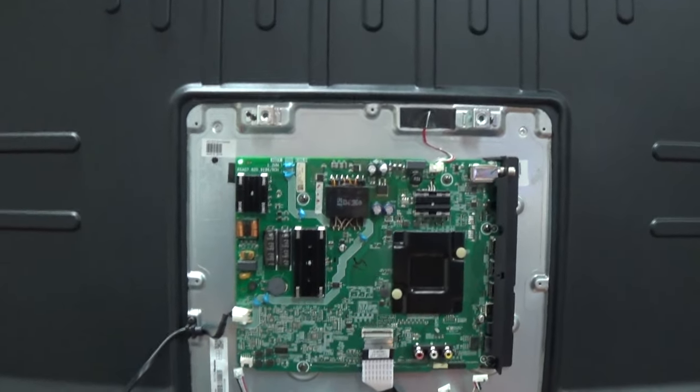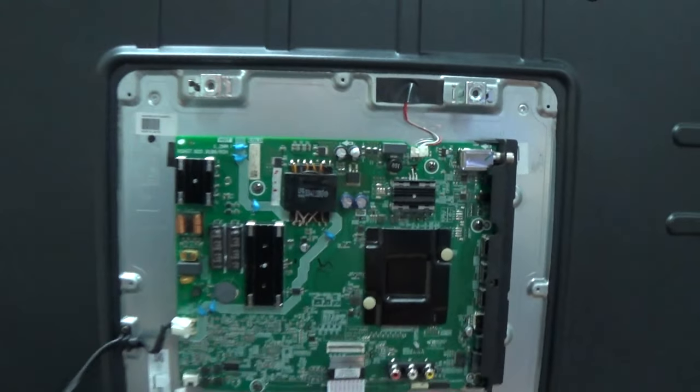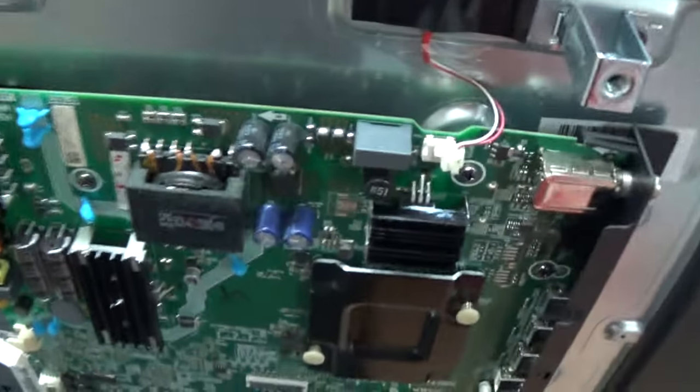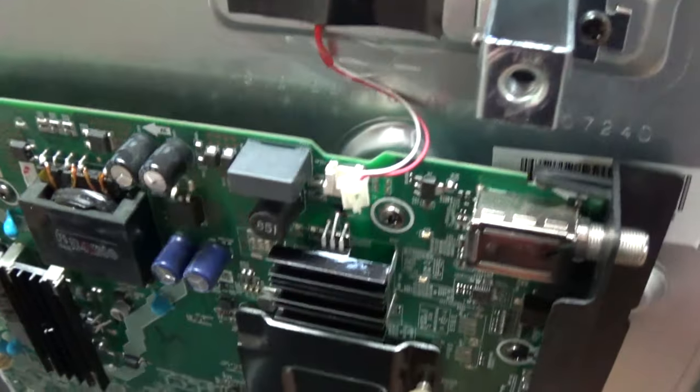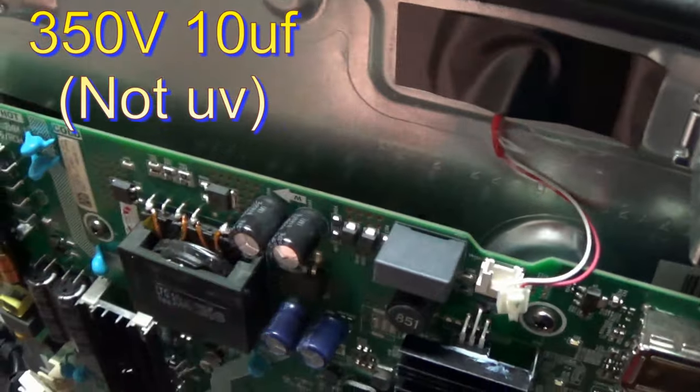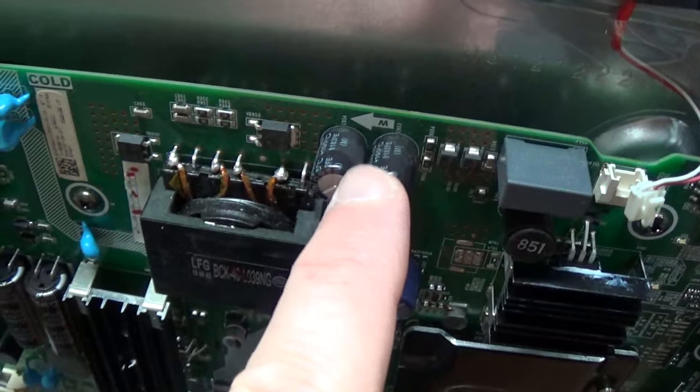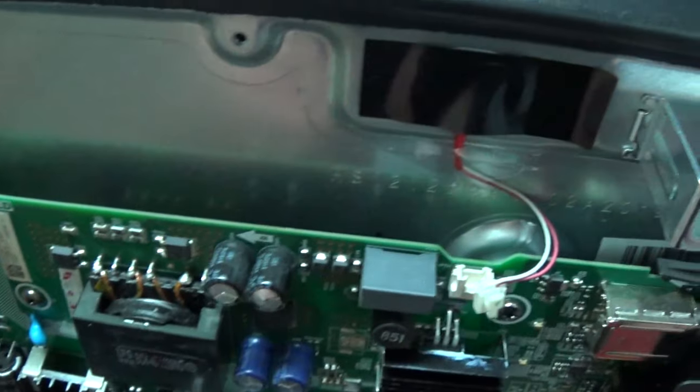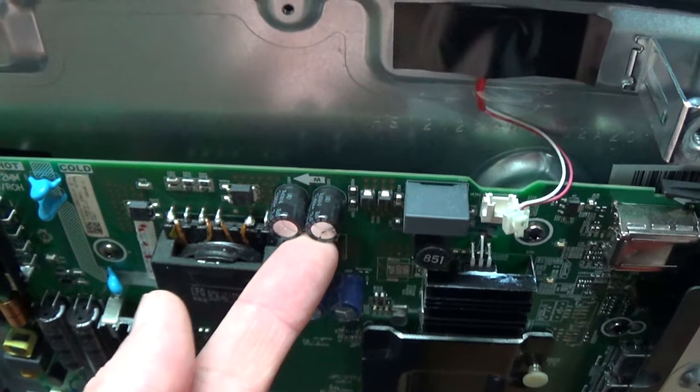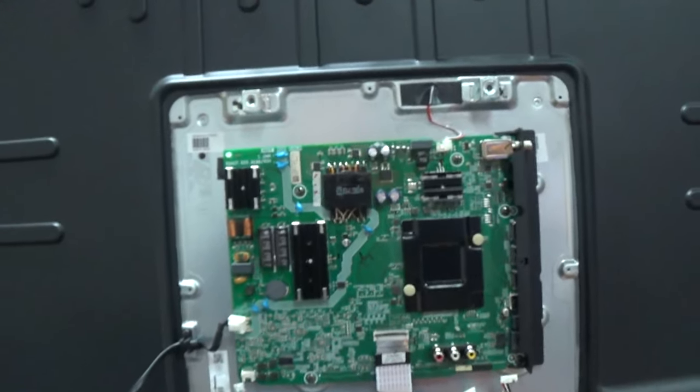So, what we've got to do here is remove this capacitor right here and put a new one on. Now, these capacitors are, let's see if I can read it here, it's 350 volt, 10UV. I think that's what it said on it, 350 volt, 10UV. And you can actually find these on eBay or any electronic site online and order them. So, I paid about nine bucks and got ten of them. So, it's very inexpensive and all you have to do is just know how to solder a little bit.